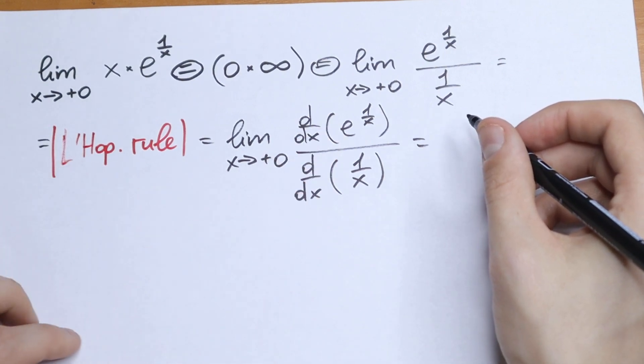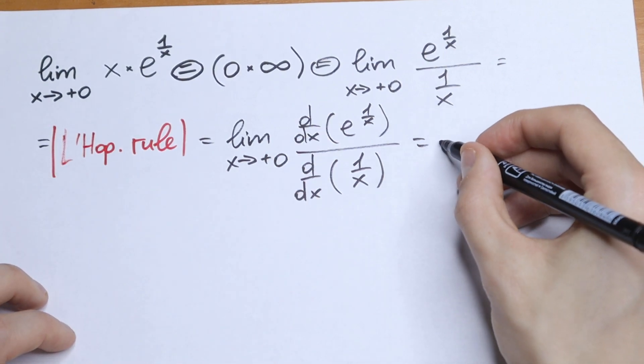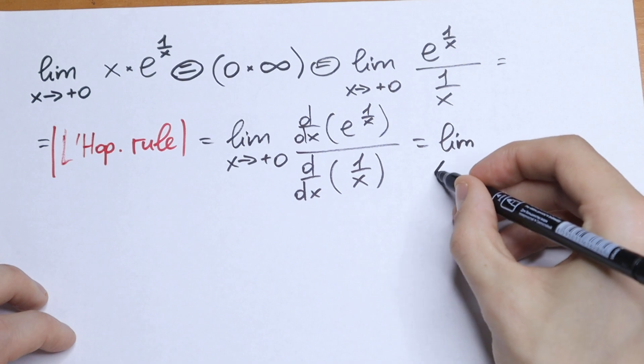So this is a classic case. We all know that the derivative of e to the power x will be e to the power x.